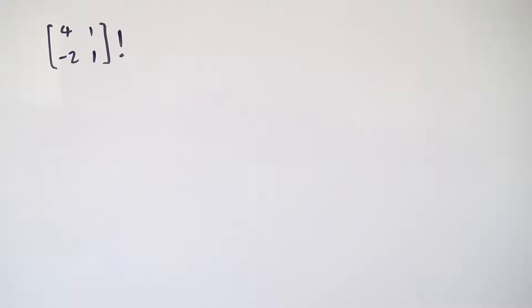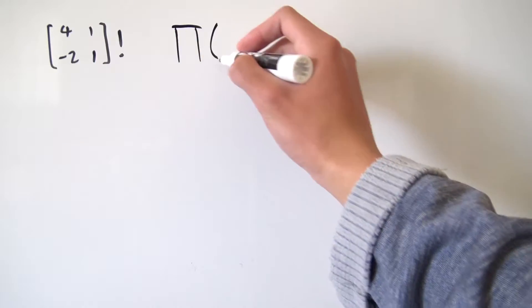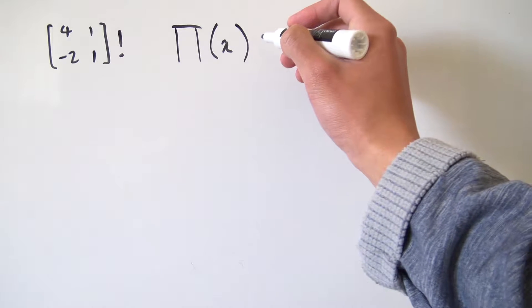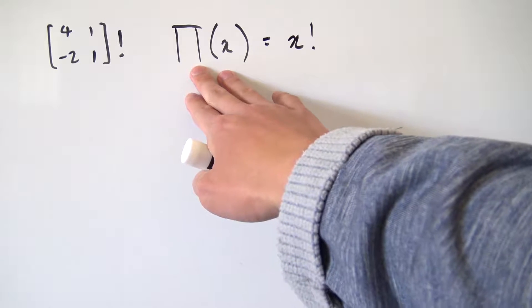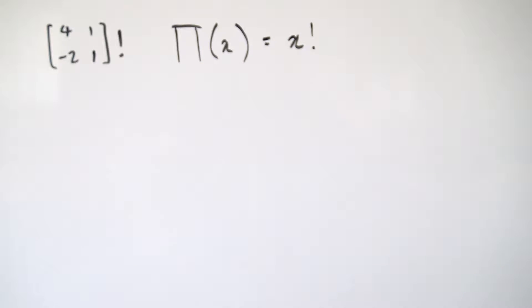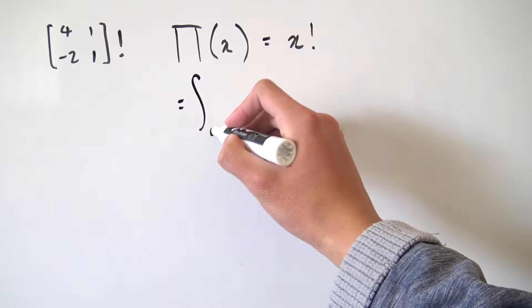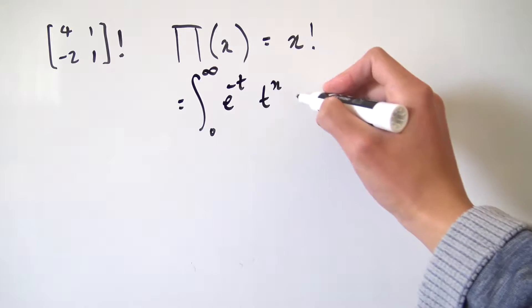Fortunately, we do have an alternative function for our factorial that acts the exact same way but has a different definition — the Pi function. If we have Pi of some number x, where x is a natural number, that's the exact same thing as x factorial. The nice thing with the Pi function is that it has an integral representation: Pi(x) equals the integral from 0 to infinity of e to the minus t, times t to the x, dt.